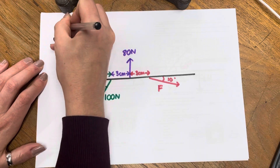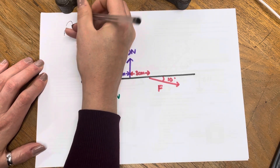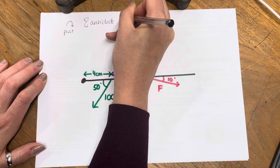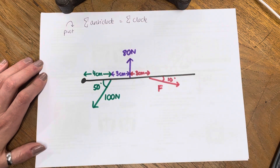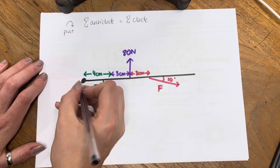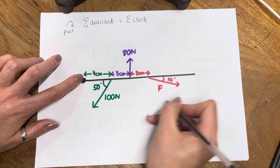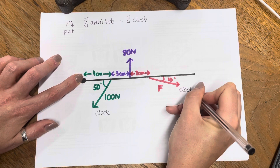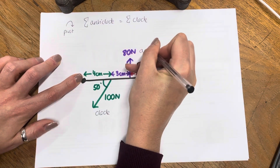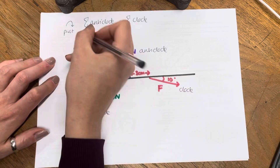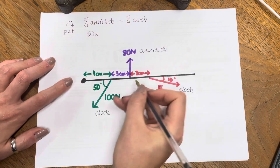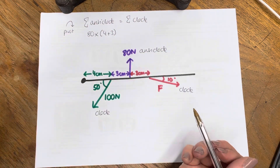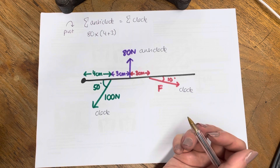I'm going to take moments once again around the pivot. And once again it's the sum of anticlock equals the sum of clock. It's always good to write this because it shows you're using the principle of moments, even if you get things wrong. So with this as the pivot, the two downward forces are trying to pull this around clockwise. The upward force is anticlockwise. My anticlockwise moment is going to be 80 times 4 plus 3, which is 7 centimetres — and since everything is in centimetres, I can keep those distances in centimetres.